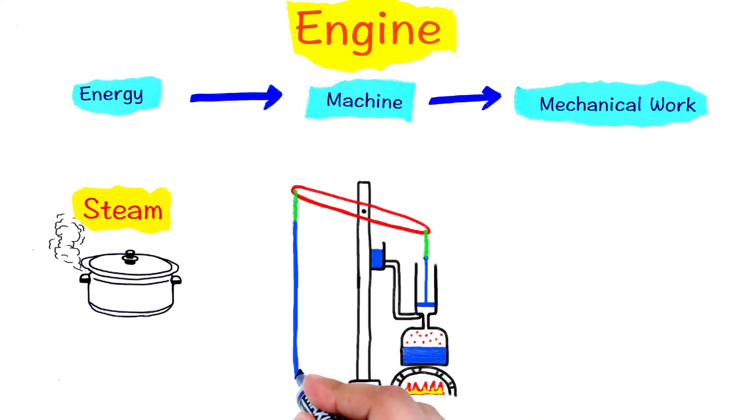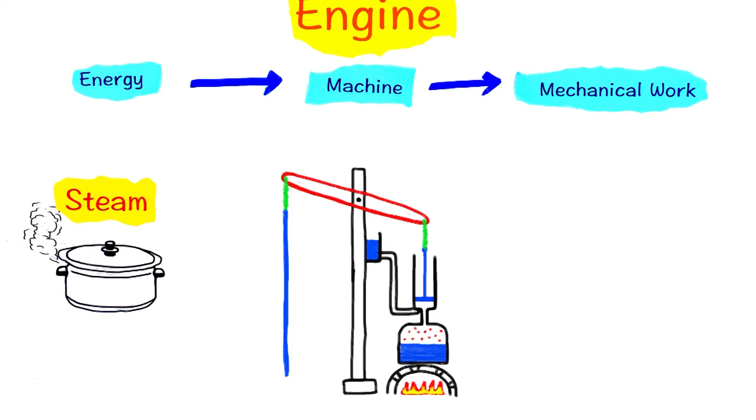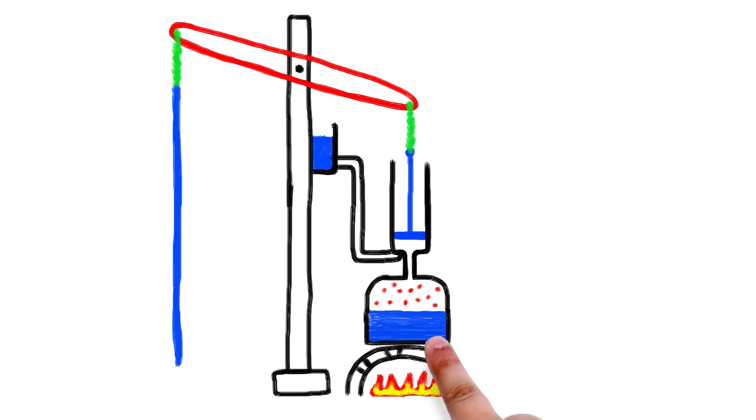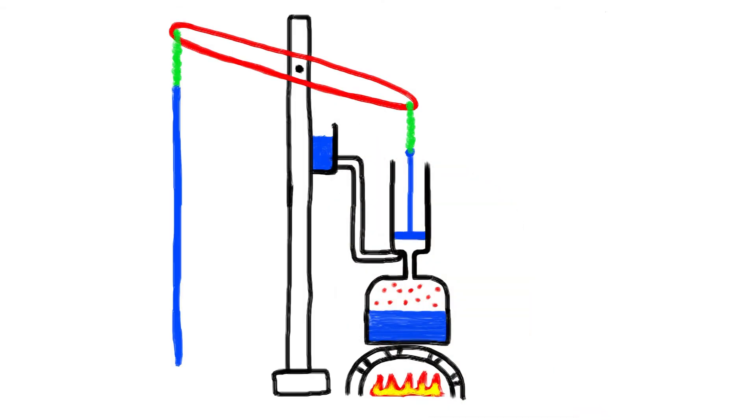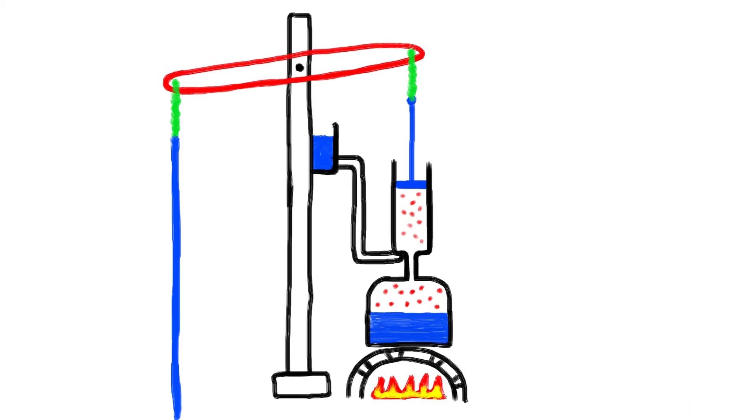People knew about the potential of steam as an energy source centuries ago, but it wasn't until the mid-18th century that a practical steam engine was built. The first steam engine looked something like this. Here is our boiler. The resulting steam would push against the piston aided by the weight of the beam. The piston will start to move up. To push the piston down again, cold water was injected to cool the steam down.